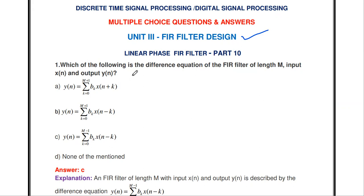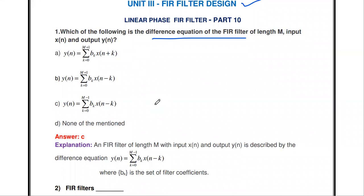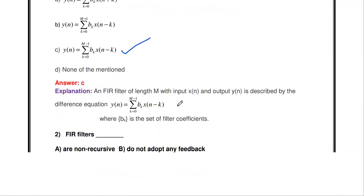The first question: which of the following is the difference equation of FIR filter of length M, input x(n) and output y(n)? All discrete time systems are represented by the difference equation. For FIR filter of length M, the difference equation is y(n) = summation k=0 to M-1 of bk·x(n-k). Here M is the length of the filter.